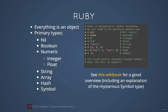Ruby is again very similar to Python — everything is an object, and they have a simpler list of data types. Ruby has a unique type called symbol which doesn't exist in any other language. I'll leave it as an exercise for the viewer to look up what the symbol type is and figure out what it does.